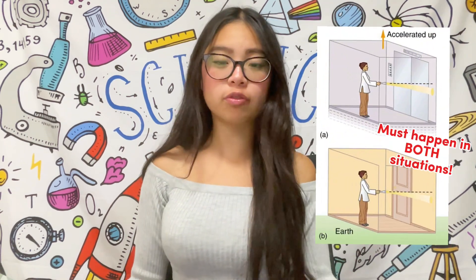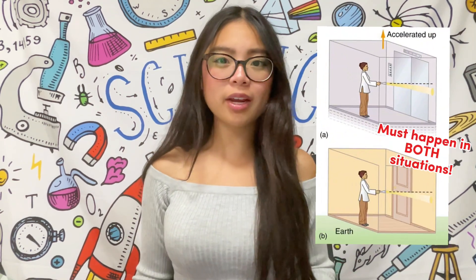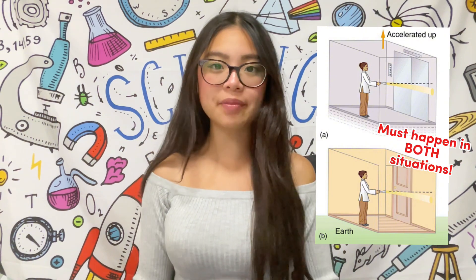We can now recall the main idea of the equivalence principle: we cannot distinguish between an accelerating reference frame and the Earth's gravitational field. So it appears that light bends in the presence of a gravitational field. Einstein's theory of general relativity brought new ideas to light for our understanding of gravity. Instead of a mysterious force that propagated in a mysterious way, he told us that gravity is the curvature of space-time.